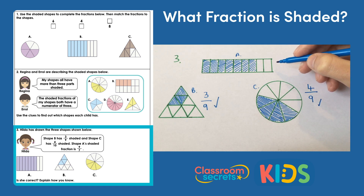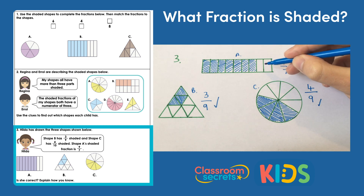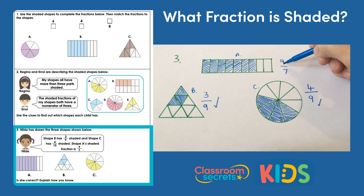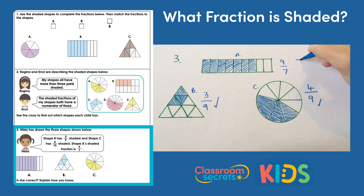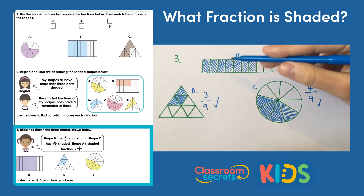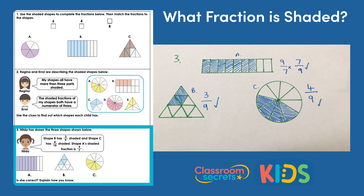For shape a, Hilda says the shaded fraction is nine sevenths. Now when you look at nine sevenths, you can see that the numerator — the top number — is larger than the bottom number, and in this case that can't be true, because this is over a whole. What we're actually looking at is seven parts shaded — counting: one, two, three, four, five, six, seven — so that's our numerator, and there are nine parts altogether. So the correct fraction is seven ninths for shape a, not nine sevenths.